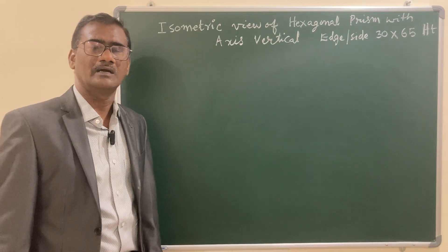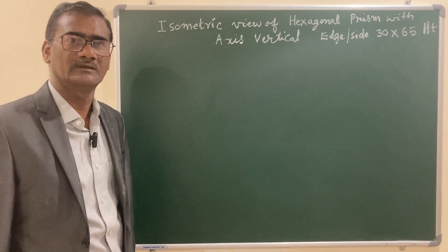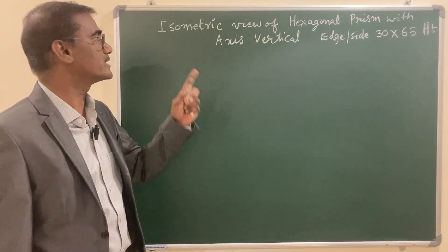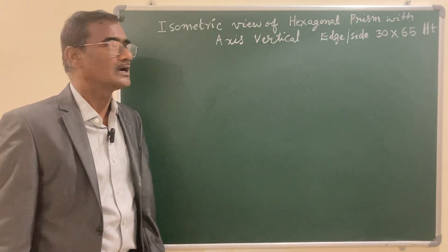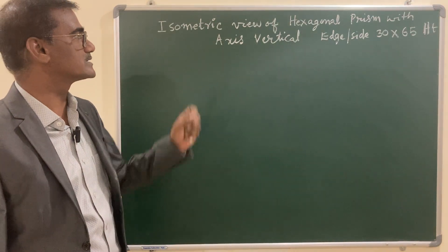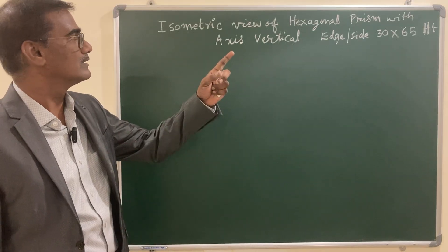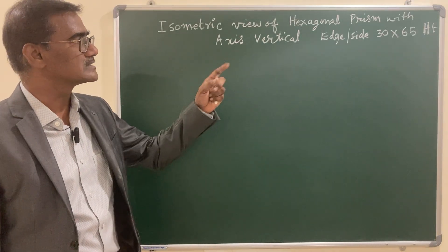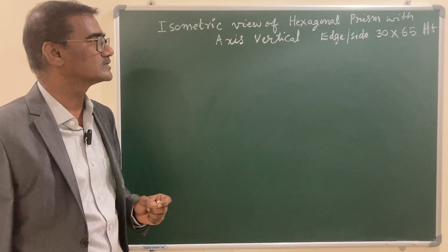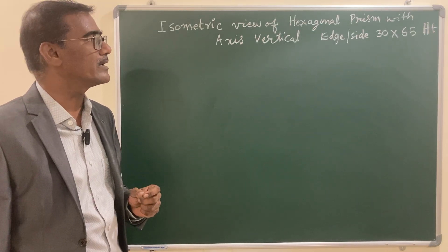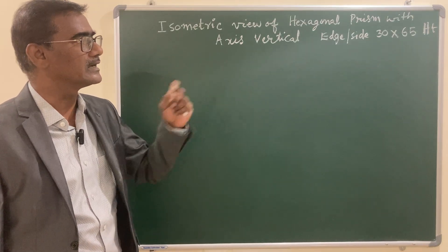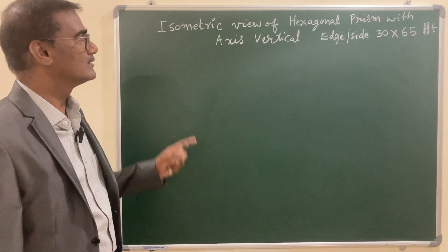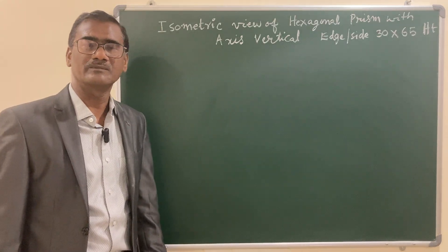Hello everyone, I'm Dr. Ravi, professor of mechanical engineering. Today's topic is isometric view of a hexagonal prism keeping the axis vertical. The dimensions given are edge (also called side) = 30 mm and height of the prism = 65 mm.